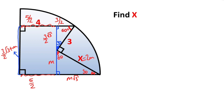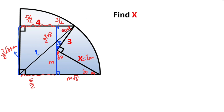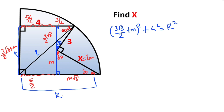Next, if we connect these two corners, this side must equal the radius r. For this triangle, if we apply the Pythagorean theorem we get the value of r. So ((3√3)/2 + m)² + 4² = r². We also know that r equals 5/2 + m√3.